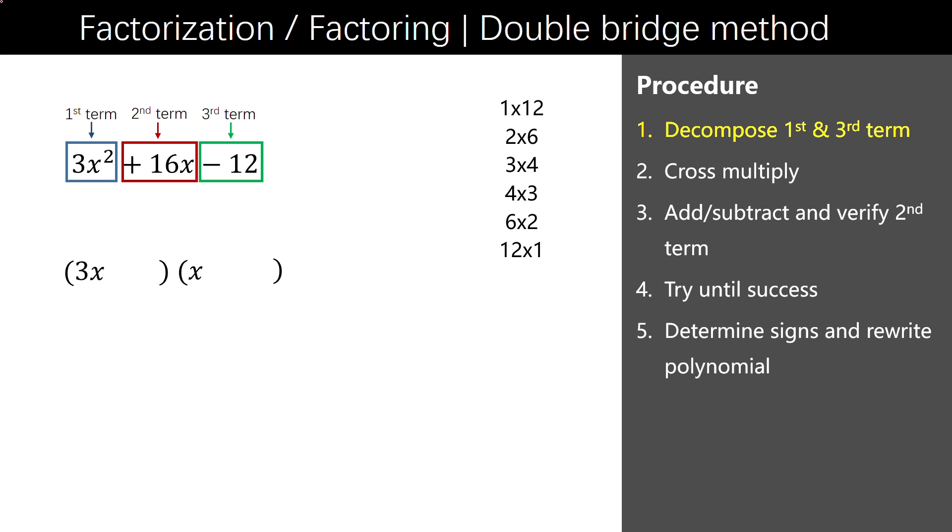But keep in mind that the two items that negative 12 break apart has to be one positive and one negative. Let's try 1 times 12 equals 12 first. Step 2. We draw a bridge connecting the outer items and multiply them. 3x multiplied by 12 is 36x. Next, draw another bridge connecting the inner items and multiply them. 1 times x is 1x.